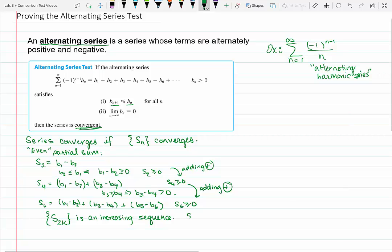So it's an increasing sequence. S2 is less than or equal to S4, which is less than or equal to S6, so on and so forth.